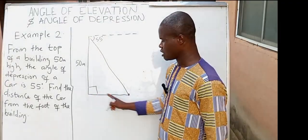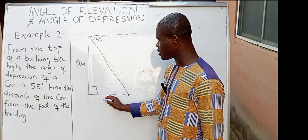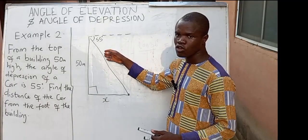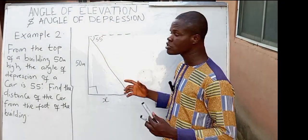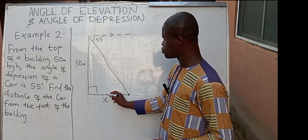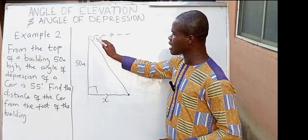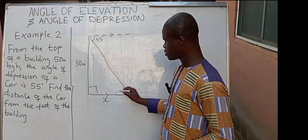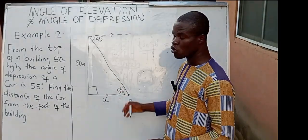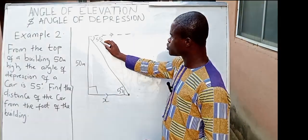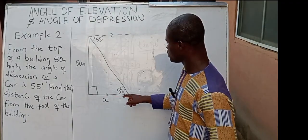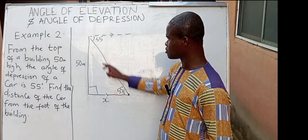This is where the building is, and this is where the car is. Under angles of depression, once you have made your angle of depression with the normal, always note that this normal line and this line are parallel. Since they are parallel, this angle is the same thing as the angle here — 55 degrees. Why? Since these two lines are parallel, this angle and this angle are called alternate angles. So if here is 55 degrees, here must also be 55 degrees, and we have gotten our right-angled triangle.